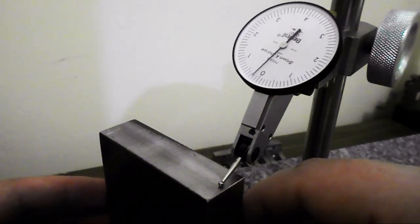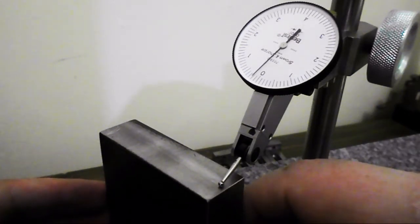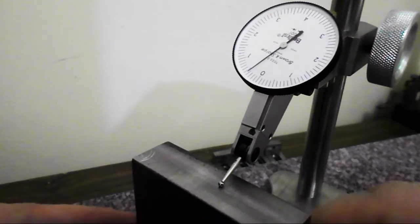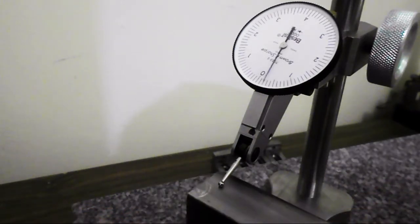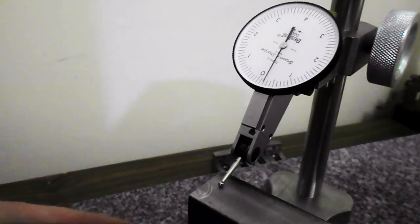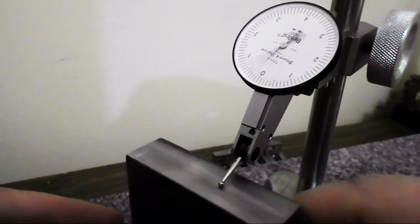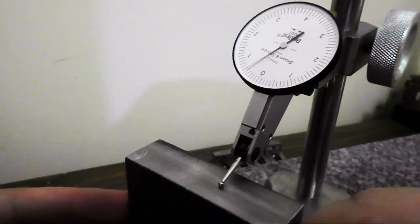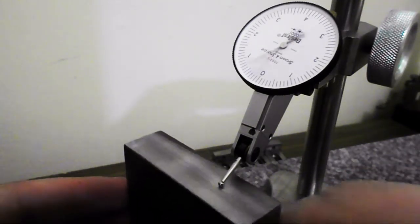Now here we're about zero and about plus two tenths, let's call it. And in the middle, plus four tenths, and on the end, about minus two tenths. So, all in all, it's parallel within about six tenths, which isn't too bad for what I'm going for here.